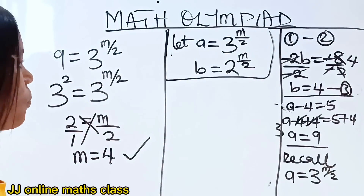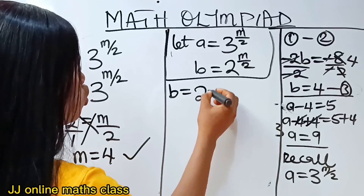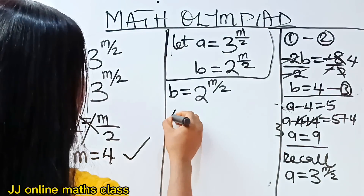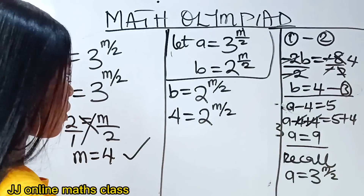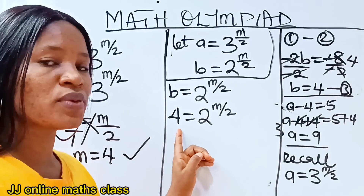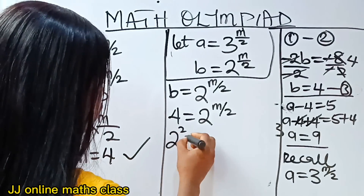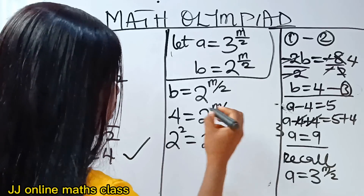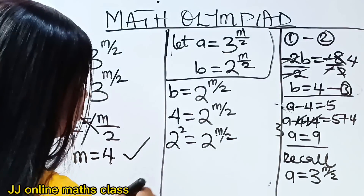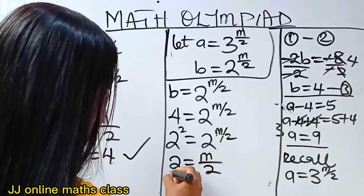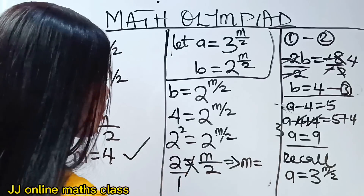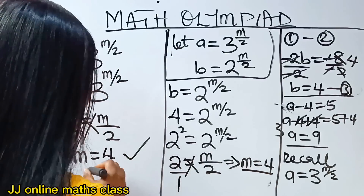Now let's use b as well. Recall that b is equal to 2 to the power of m over 2, and we got b to be 4. So 4 is equal to 2 to the power of m over 2. We put 4 in base 2: 2 squared equals 2 to the power of m over 2. The bases are equal, so we equate the powers: 2 equals m over 2, and cross-multiplying gives m equals 4. Notice that we get the same answer.